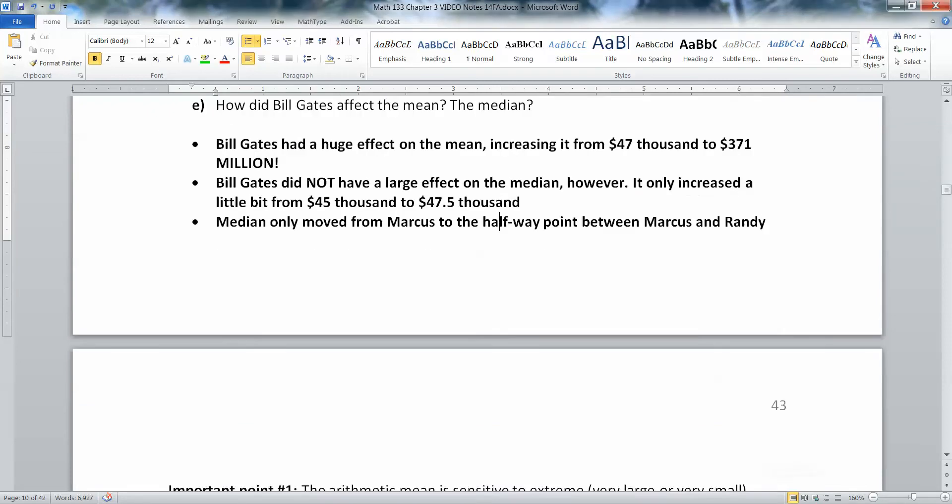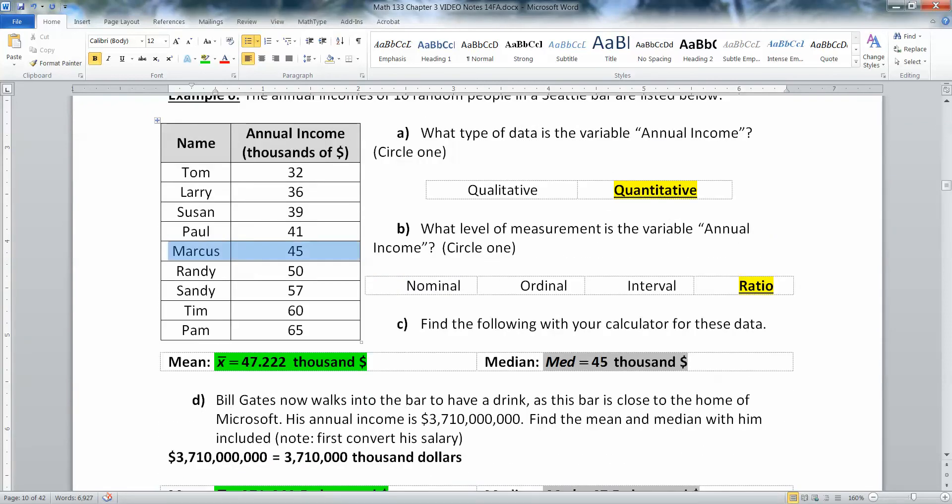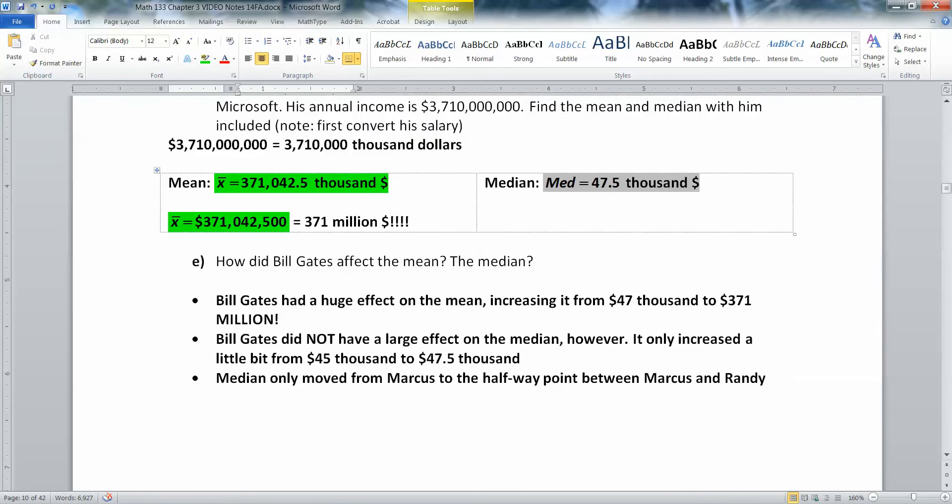And I'm going to go back here and type up that thing I said about Marcus. The median moved from Marcus to the halfway point between Marcus and Randy. We're done with that. And I'll be back to talk more about the difference between the mean and the median and how that affects skewing, as well as the mode. I'll see you back here then.